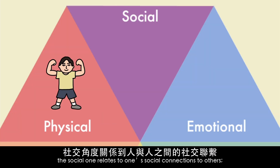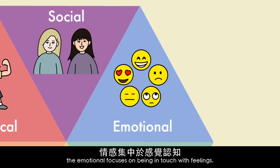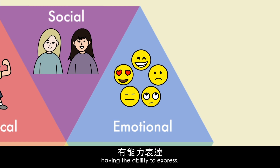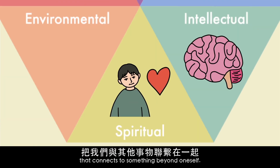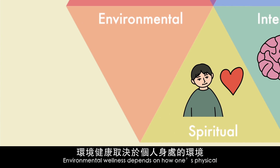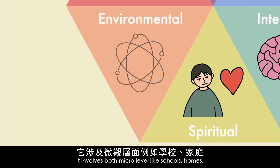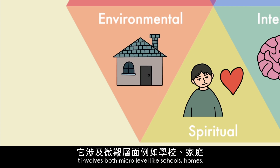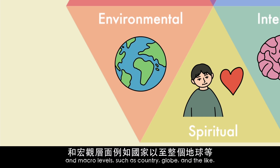The social dimension relates to one's social connections to others. The emotional dimension focuses on being in touch with feelings, having the ability to express, and being able to control emotion. Spiritual wellness is the feeling that connects to something beyond oneself. Environmental wellness depends on how one's physical and societal surroundings affect functioning. It involves both micro levels, like schools, homes, workplaces, and neighborhoods, and macro levels, such as country and globe.